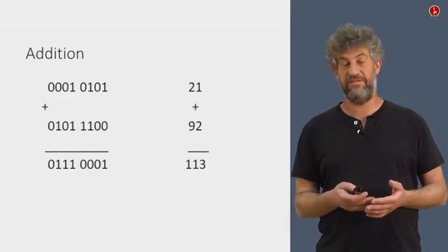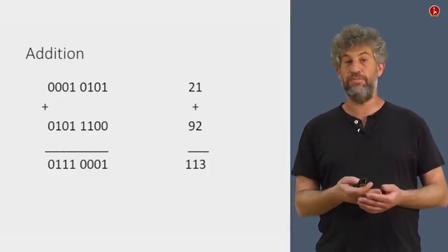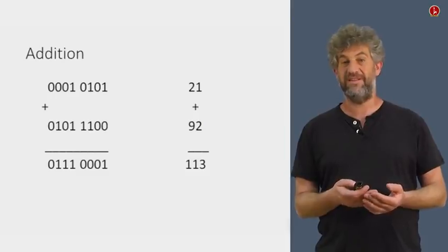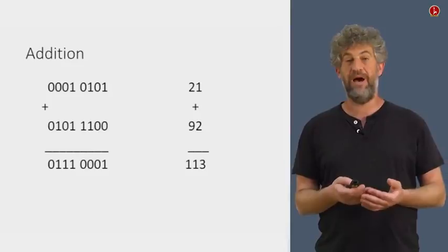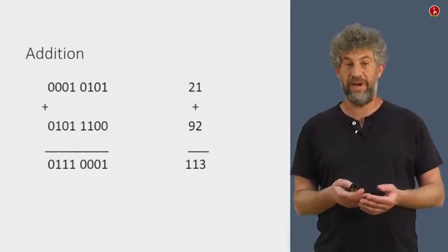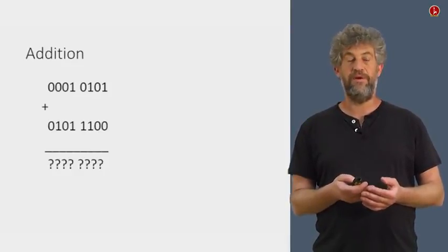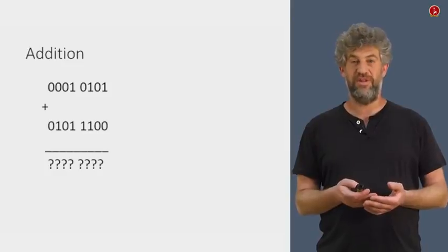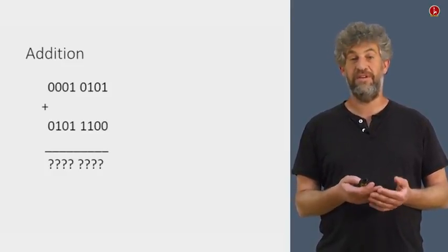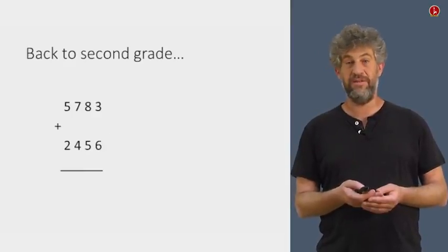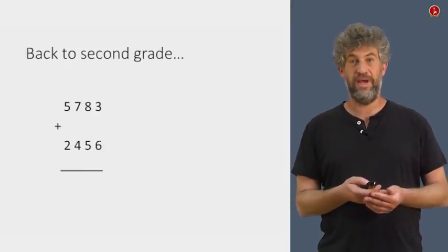This is great and fine, but of course that's not what a computer does. A computer doesn't know how to add decimal numbers without first converting them to binary numbers. So we need to figure out how to actually do the addition of binary numbers directly without converting them to decimal. And how are we going to do that? As usual, everything that I need to know, I learned in second grade. So we need to go back to second grade.